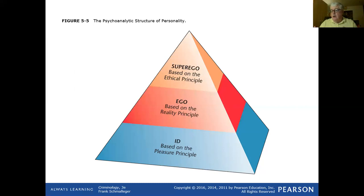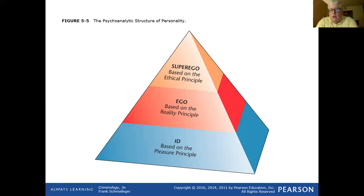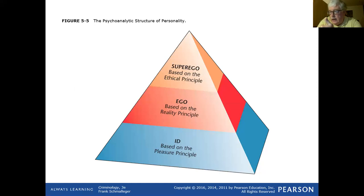Some of these theories are very similar in scope with different terminology. Piaget developed his theory a little later than Freud, but they're very similar. To summarize: the id says 'I want it'; the ego asks 'how do I get it without getting in trouble?'; the superego says 'that's not really right.'